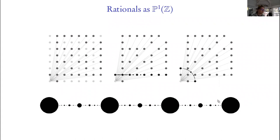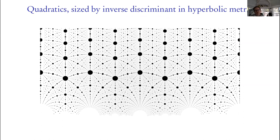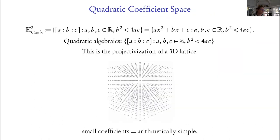This is the picture of the rationals, and the quadratic picture looking similar should have a similar explanation. The lattice you're looking at in this case is the lattice of the coefficients of the quadratic polynomials whose roots these are. So the idea is: I take the space of coefficients — a projectivization of a three-dimensional real space — and I'm interested only in those that have complex (non-real) roots, so I take the discriminant b²−4ac to be negative. Each of these vectors represents a quadratic polynomial.